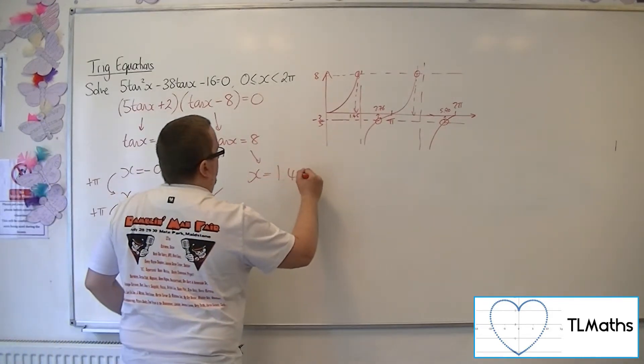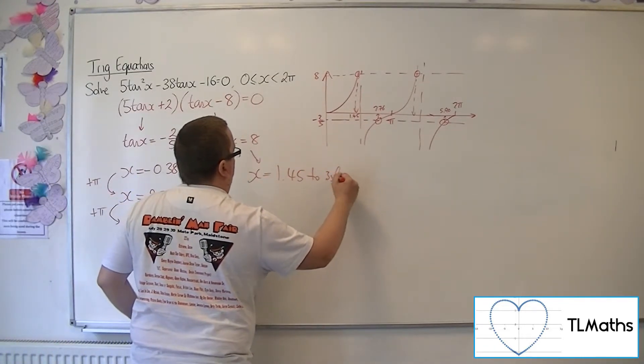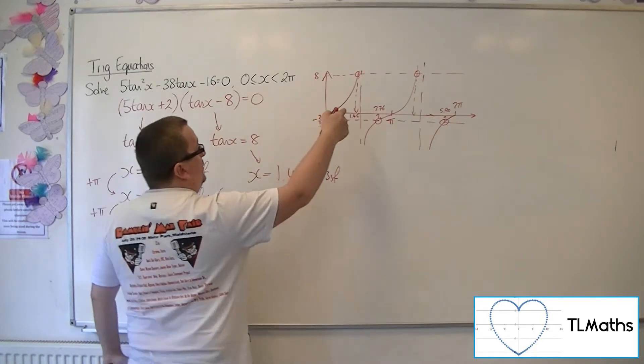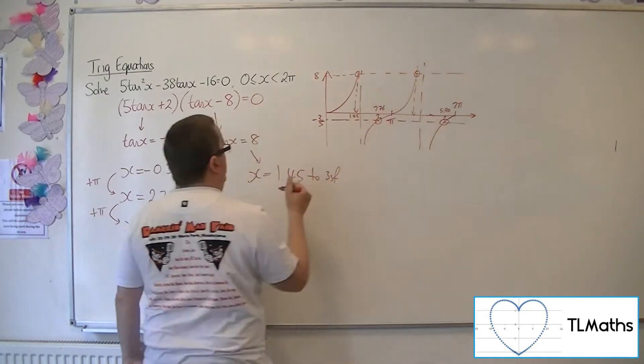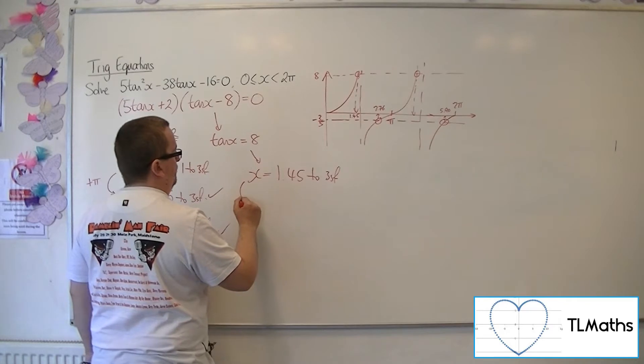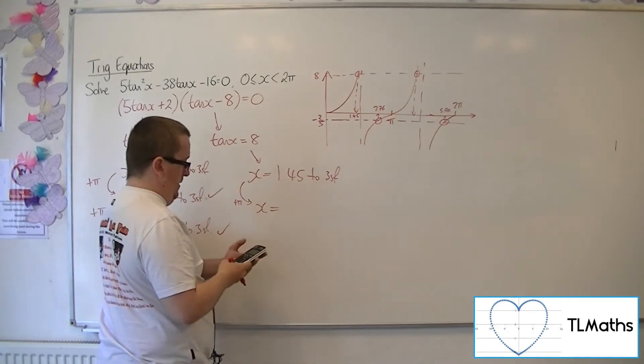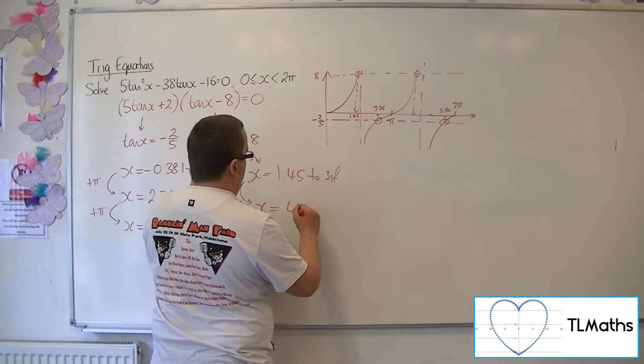So 1.45 to 3 sig fig. And then you can add pi onto that to get to the next solution. So plus pi is 4.59.